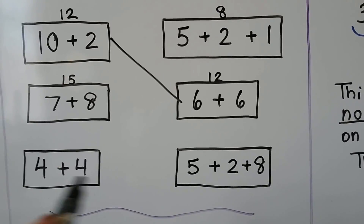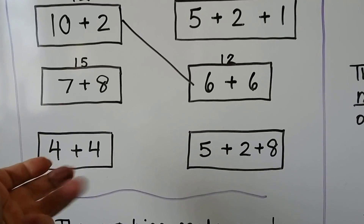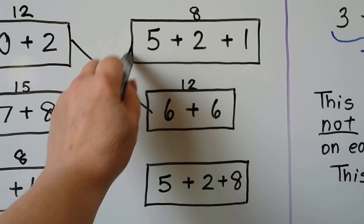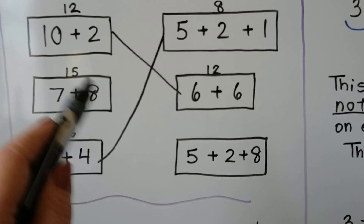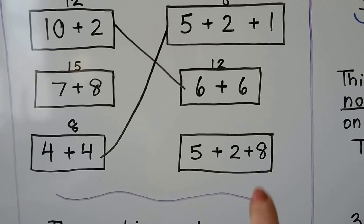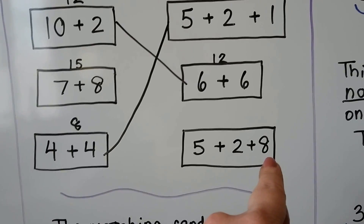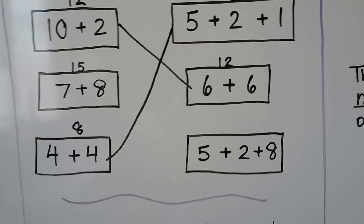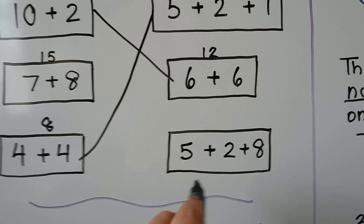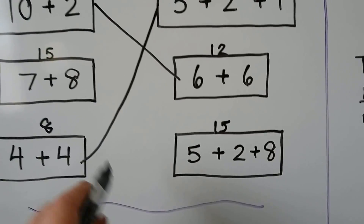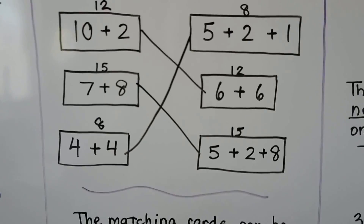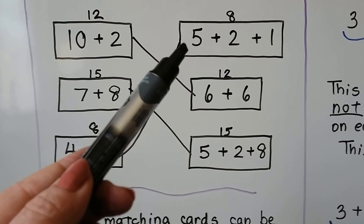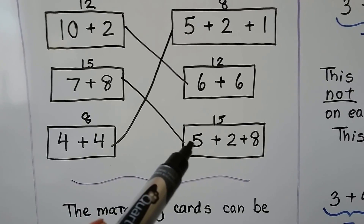4 plus 4 is 8 — that's a doubles. We can start with the 4 and count on 4: 5, 6, 7, 8. So 4 plus 4 is 8, and that means it matches the one that is an 8. So we can draw a line to match them. The only ones left are these. We have 8 as the largest addend, start counting from the 8, add the 2: 8, 9, 10. Then add the 5 — 10 plus 5 is 15. That was more compatible to add and make 10 first, then add the 5. So this one's 15. 10 plus 2 is equal to 6 plus 6, 4 plus 4 is equal to 5 plus 2 plus 1, and 7 plus 8 is equal to 5 plus 2 plus 8.